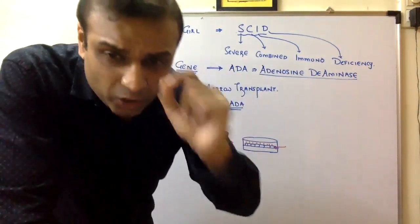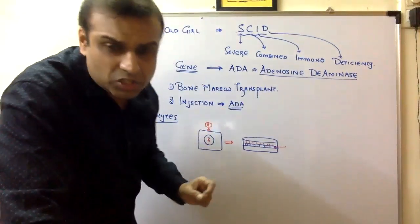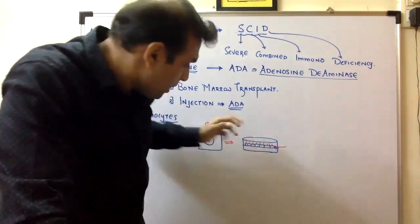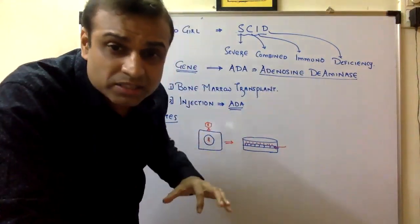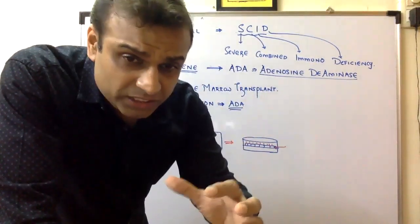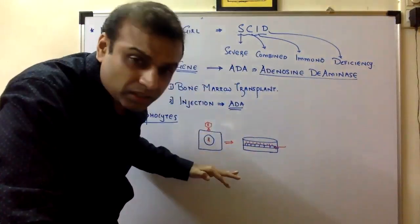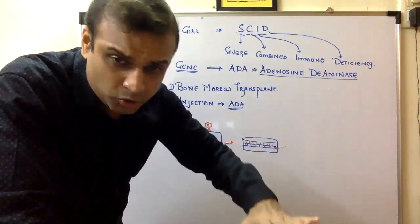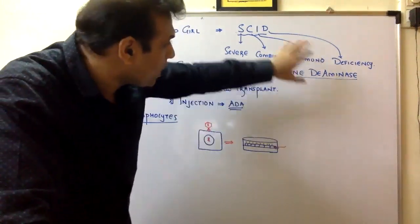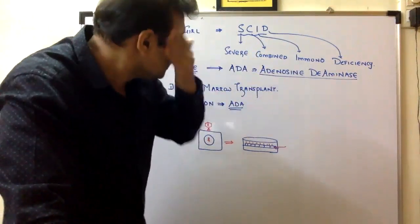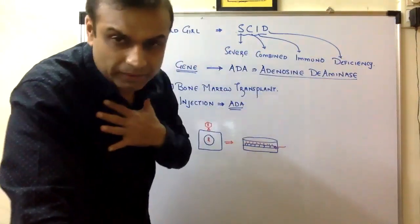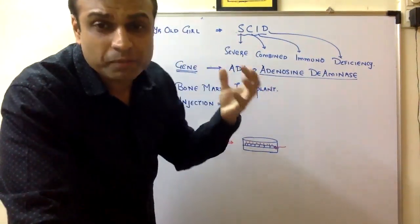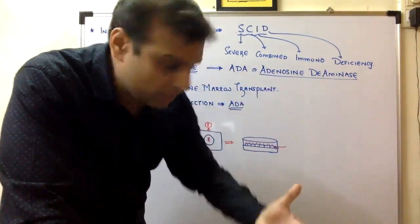Theoretically, we can introduce this functional gene at the embryonic stage. Before cell differentiation, if I insert the gene, every cell will carry the functional ADA gene and the child will not suffer from SCID — severe combined immunodeficiency. This is another application of genetic engineering or biotechnology in medicine.